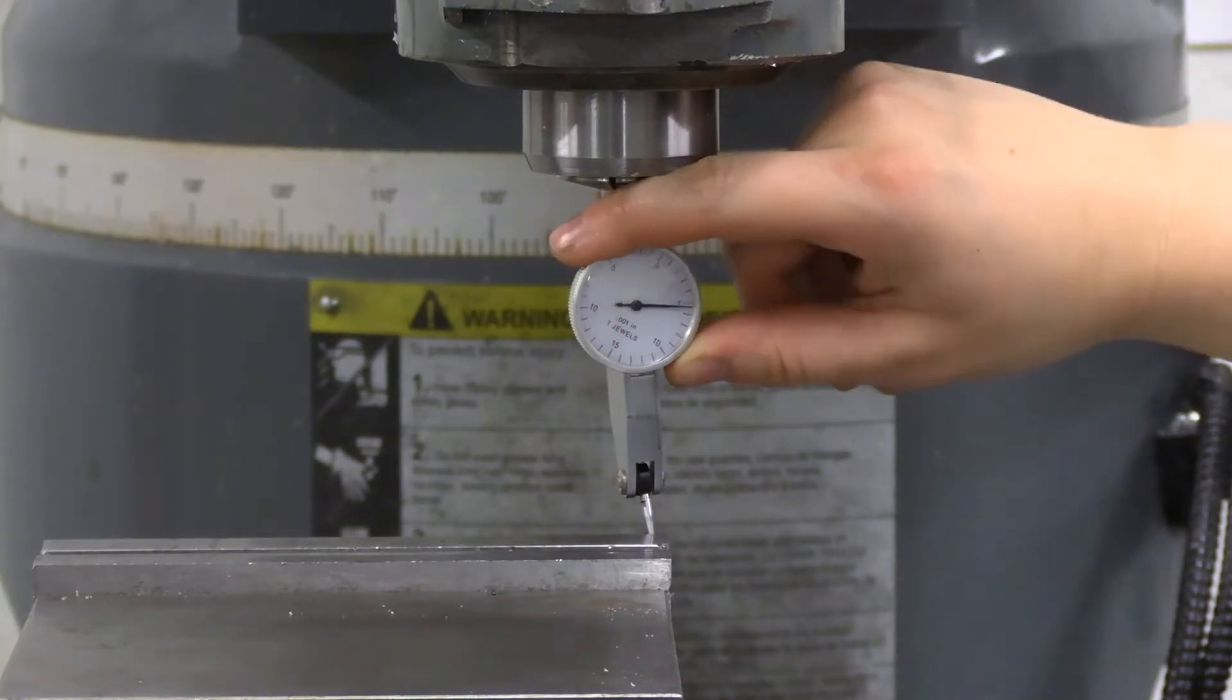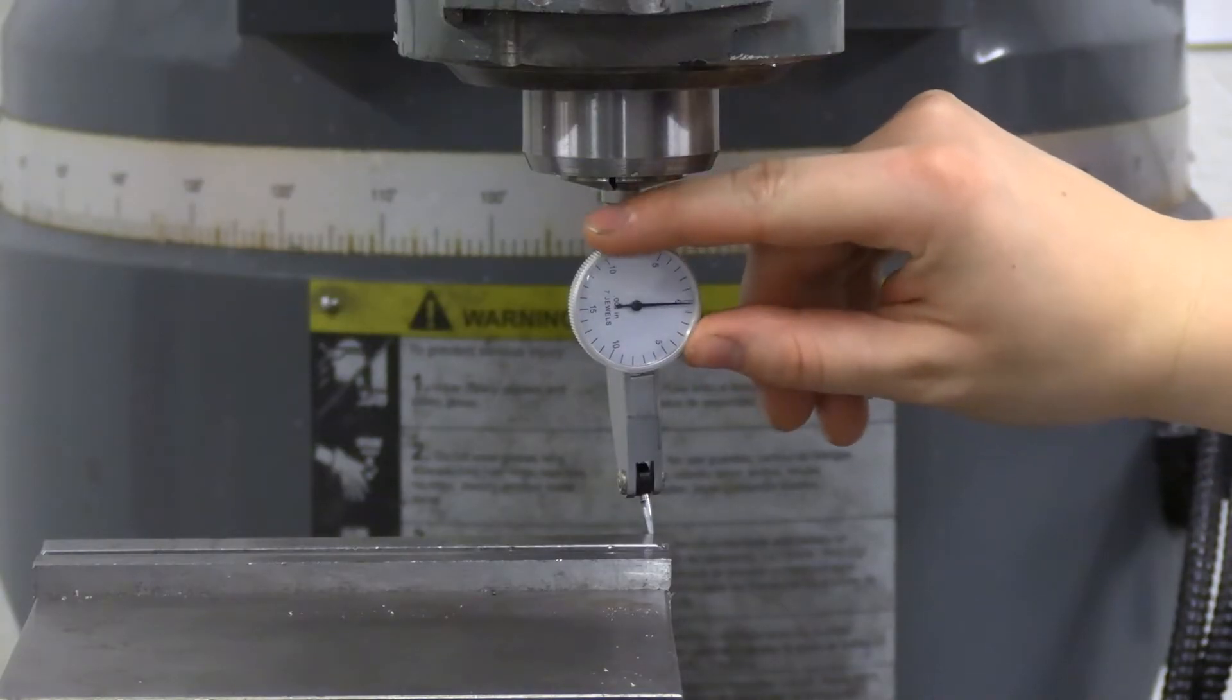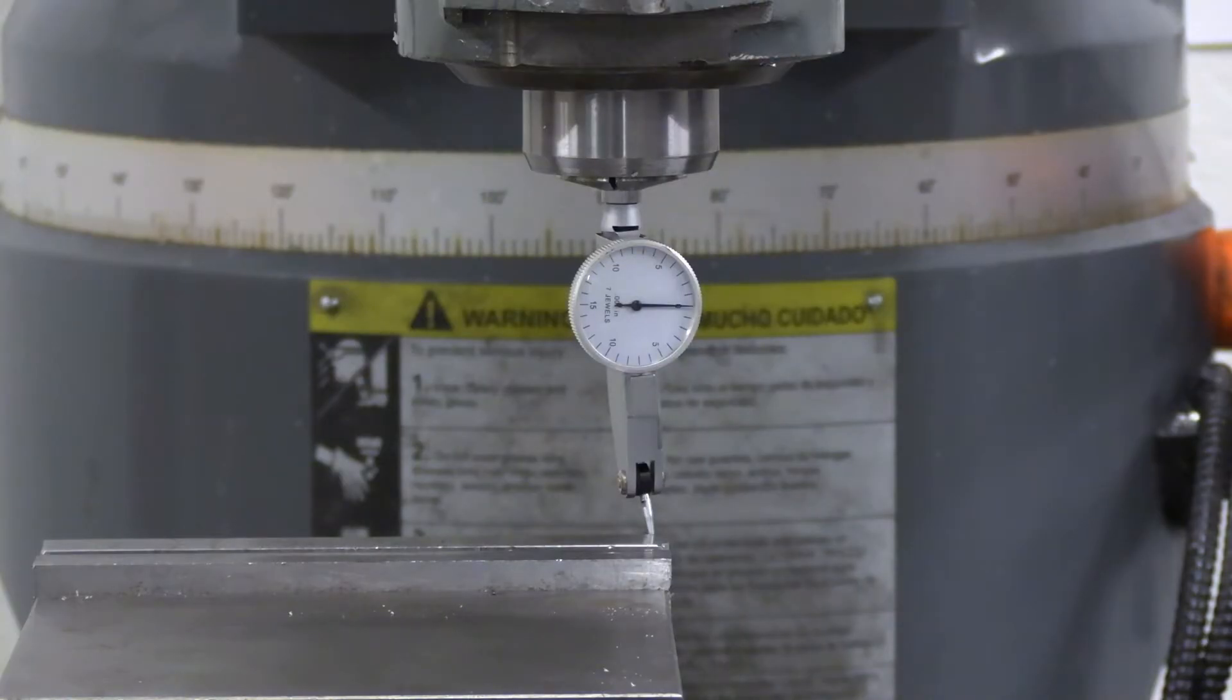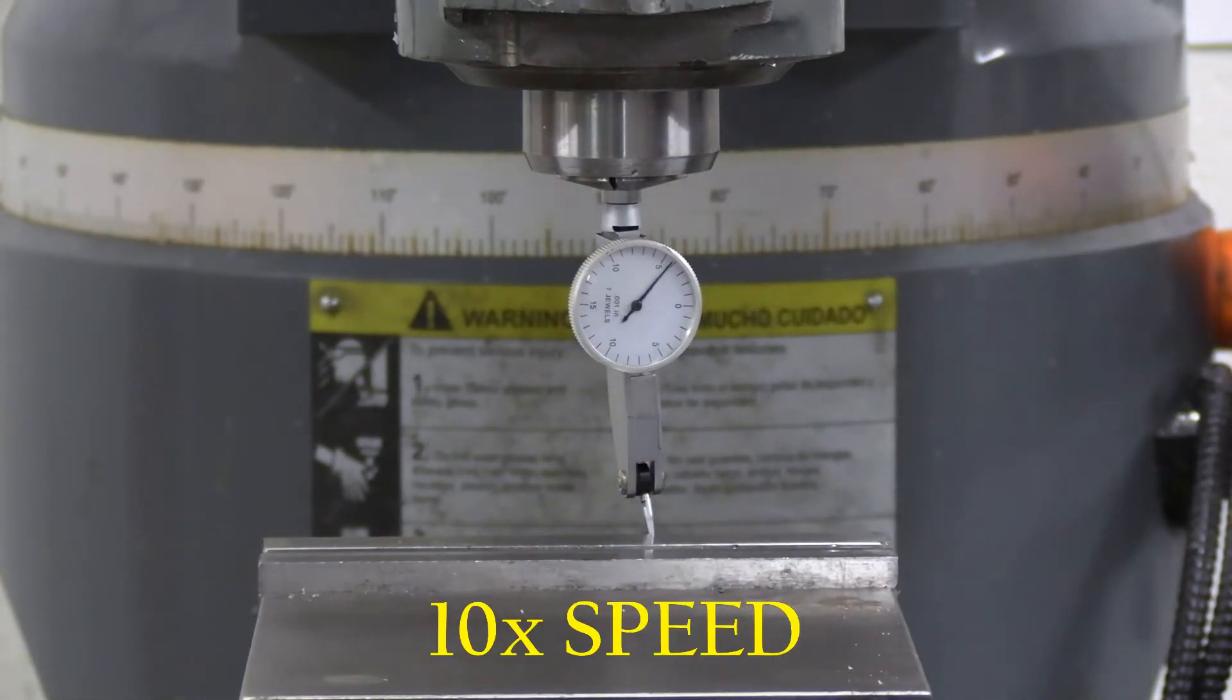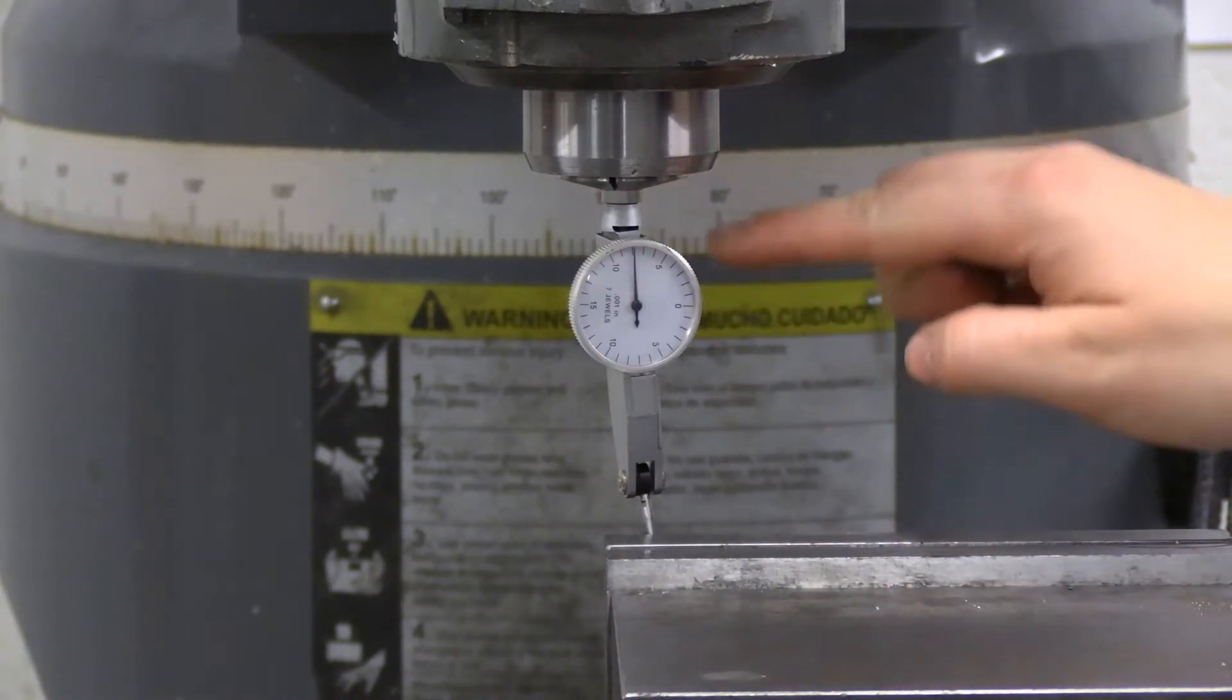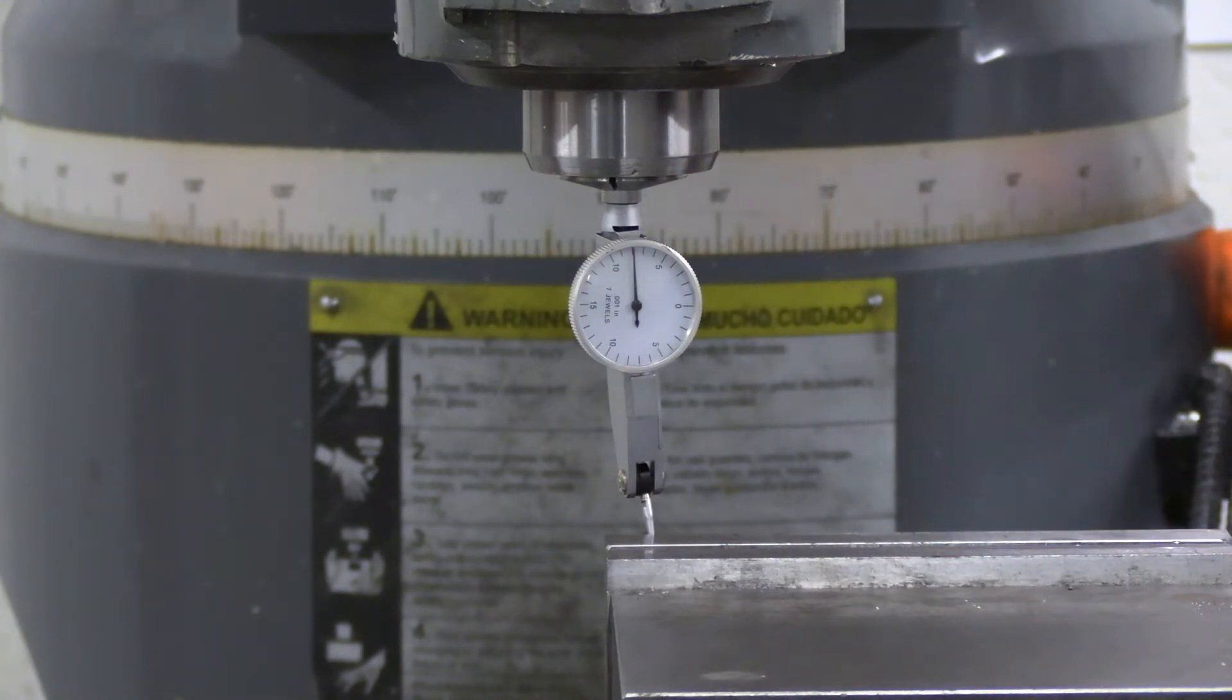Once I've made contact, I'm just going to move the face of the dial so that it is at zero. And I'm just going to turn on my auto feed. We'll watch the difference of the dial here. As you can see, we have about an eight thou difference on the alignment of this vise for this machine. So this probably needs to be realigned.